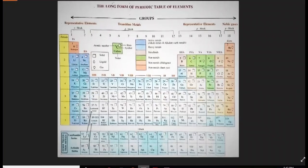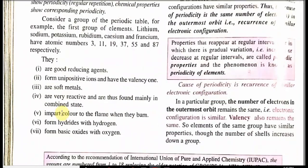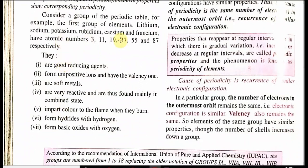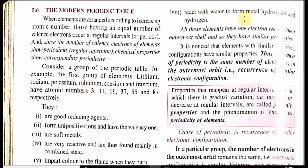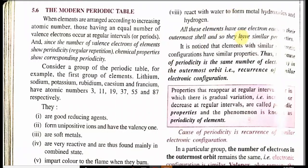Let me show you the first group elements — you can see this is the first group. They have the following atomic numbers: 3, 11, 19, 37, 55, and 87. They are all good reducing agents, they form unipositive ions (plus one), they are very soft metals, very reactive, they impart color when burning, they form hydrides with hydrogen, they form basic oxides with oxygen, and they all react with water to form metallic hydroxide, which is a base. All these elements have one electron in their outermost shell, so they have similar properties.